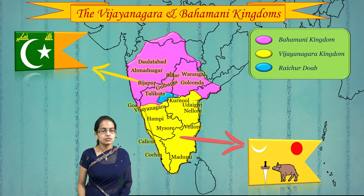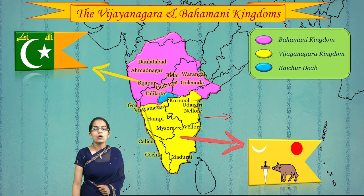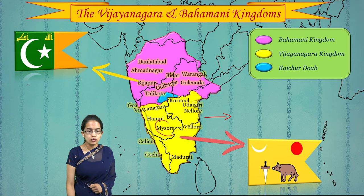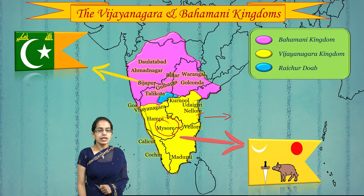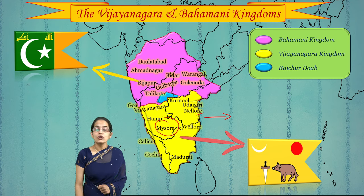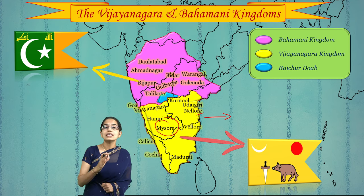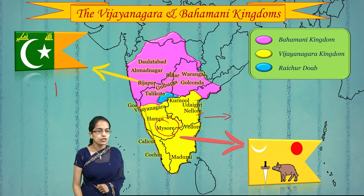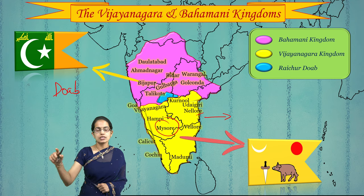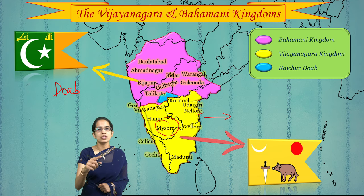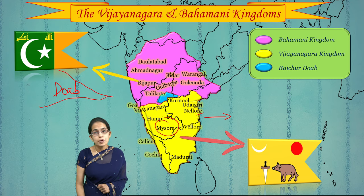The Vijayanagar kingdom was located in southernmost India, with Mysore and Chennai as two important centers. Under the Bahamani kingdom, major towns included Bijapur, Gulbarga, and Golconda, located north of the Vijayanagar kingdom. The region between these two was known as the Raichur Doab - a region where two rivers flow and the land between them is fertile. The Raichur Doab was situated between the Krishna river and its tributary, the Tungabhadra.